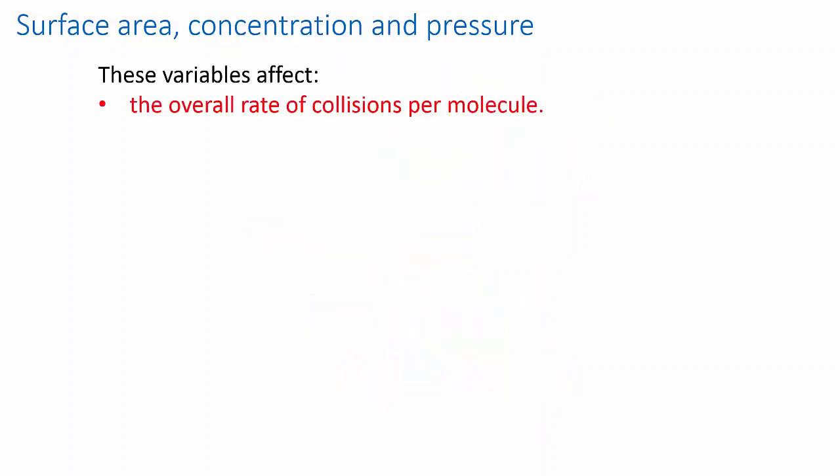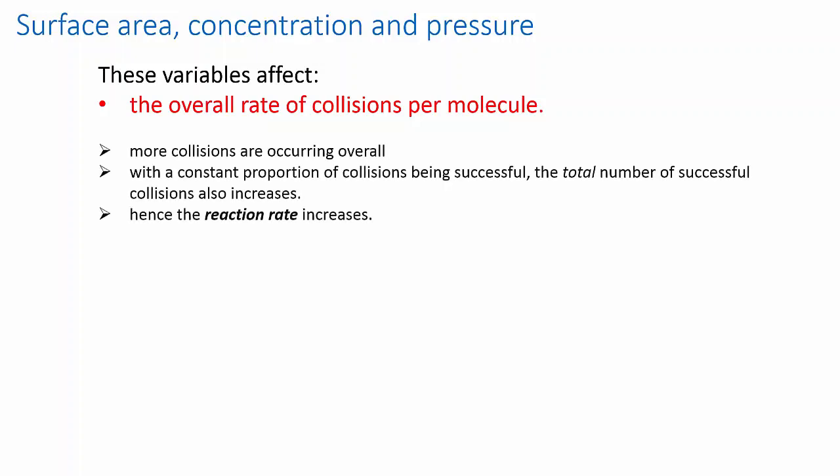So, to sum this up, increasing surface area, concentration, or pressure has the effect of increasing the number of collisions that each molecule undergoes. If the chance of a successful collision remains the same, but collisions happen more frequently, then successful collisions will also occur more frequently. This means the reaction goes faster.